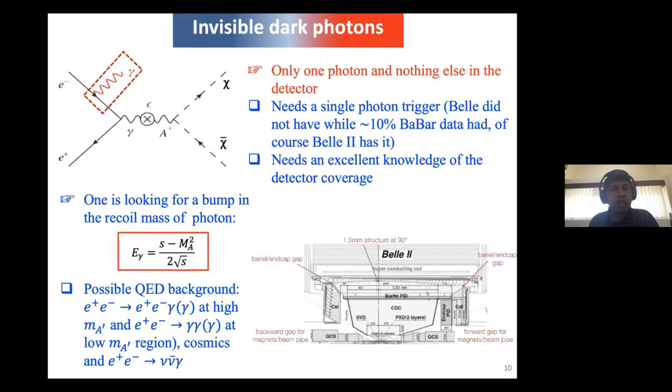Now I go to the invisible dark photon. Here you're talking of one photon and nothing else. Your A prime is going to decay invisibly. For that, you need to trigger on one photon. Again, Belle didn't have this trigger, while BaBar had it partially for just 10% of its data, while for Belle 2, this is a key physics channel and we have this trigger. Since you're talking of one photon, you need to have excellent knowledge of your detector coverage: whether this photon is going through some crack inside your detector and you're not able to reconstruct it, giving a fake signal. You see the detector tomography in a sense, like where the photon can go through and give a fake missing signal that you don't want. You need to understand your detector very well.